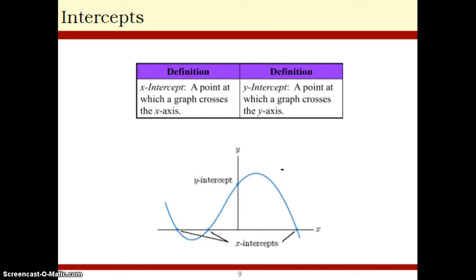Intercepts, something you should already know about. It's where the graph crosses the x-axis, where the graph crosses the y-axis. To find the x-intercept, you set y equal to 0. To find the y-intercept, you set x equal to 0. Set y equal to 0 and solve for x. Here, you set x equal to 0 and solve for y. Hopefully that should be pretty straightforward.